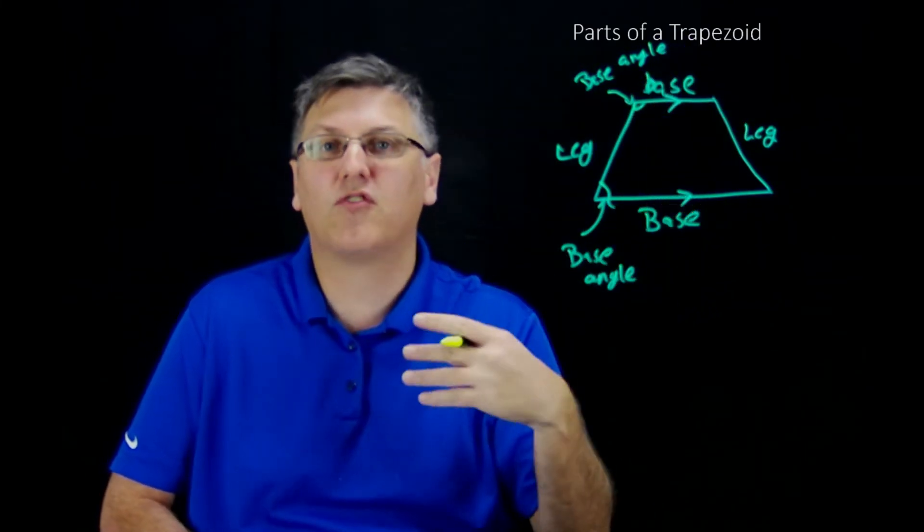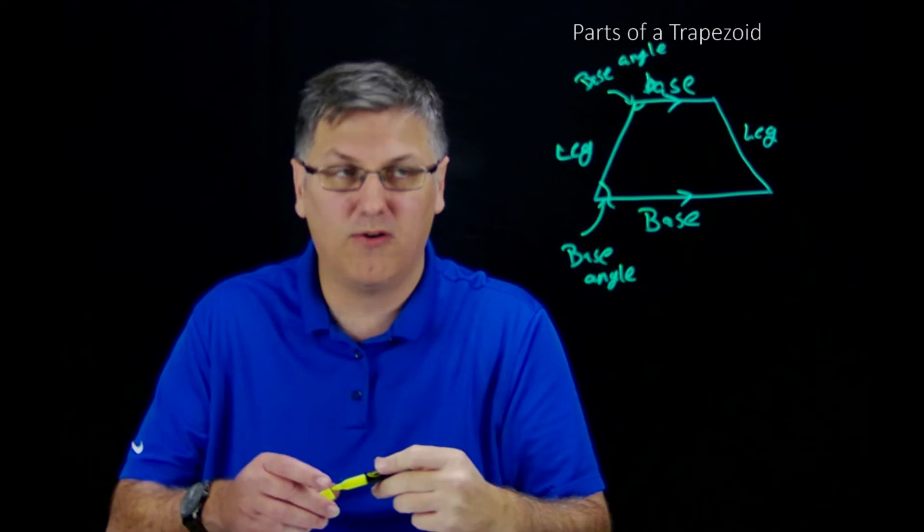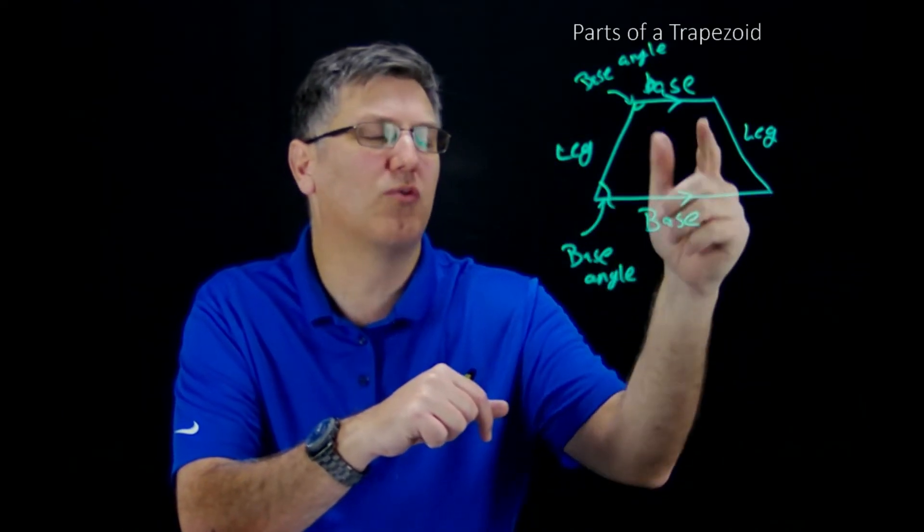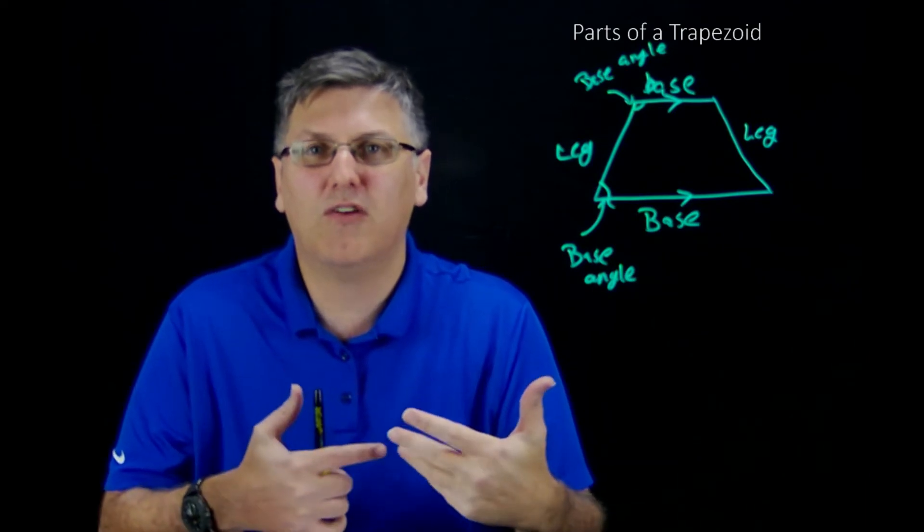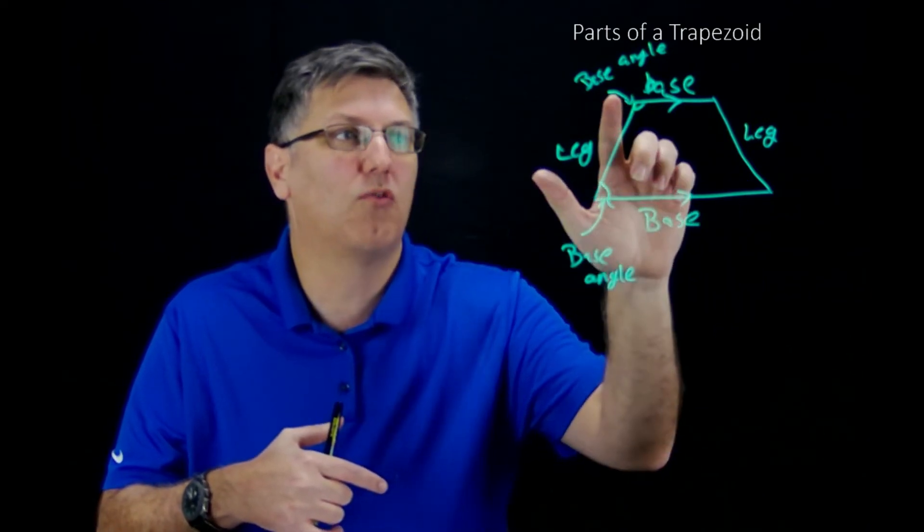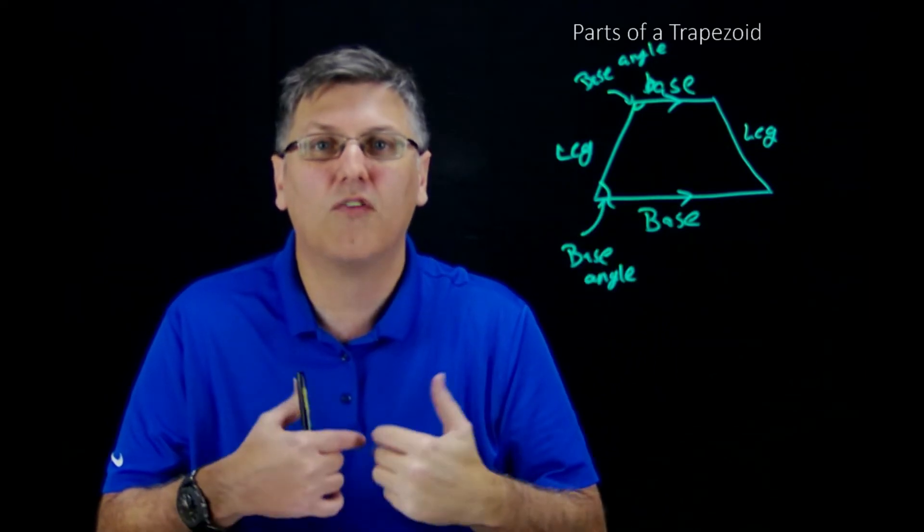So we have our bases here. Our bases are actually the two sides that are parallel. Our legs are the two sides that are not parallel. And then of course all angles really are base angles. But you have to stop and think, is it going to be the base angle along the long side of the parallel line or the base angle along the short side of the parallel line?